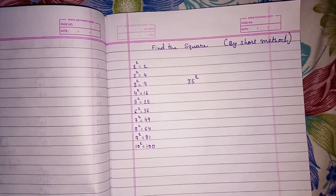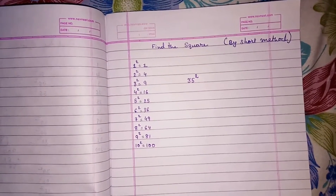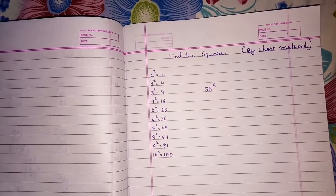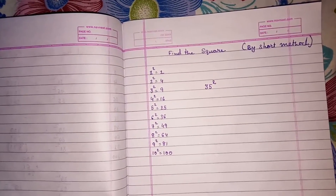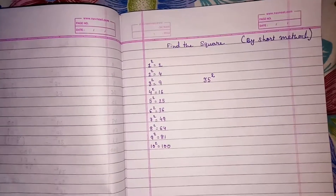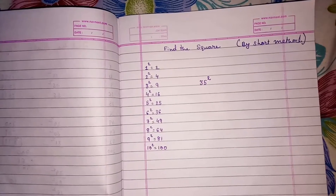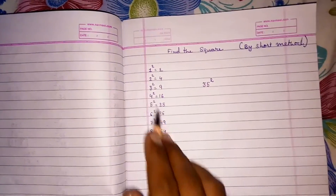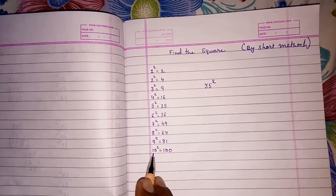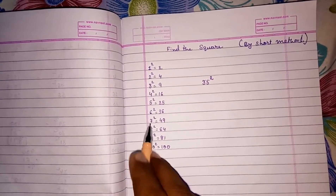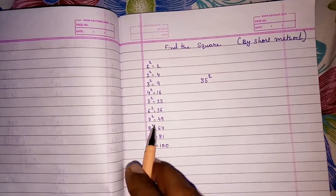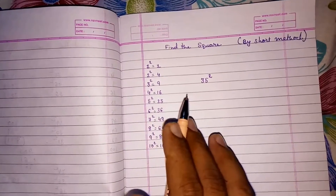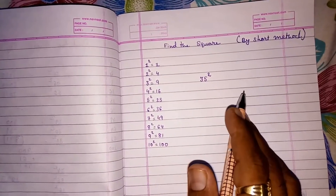For finding square, first of all you should know the square of 1 to 10. You have to memorize this numbers from 1 to 10. If you don't know the square of these numbers, you cannot find out the square of any number.